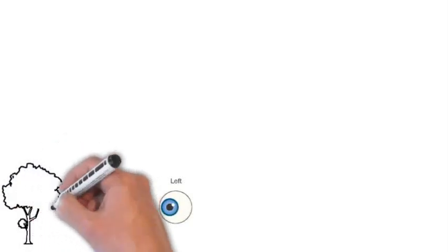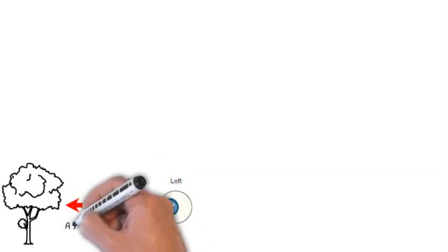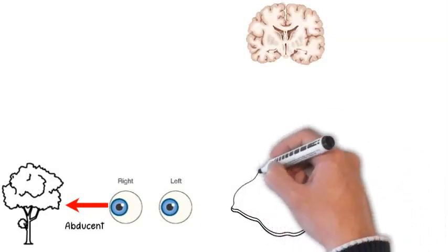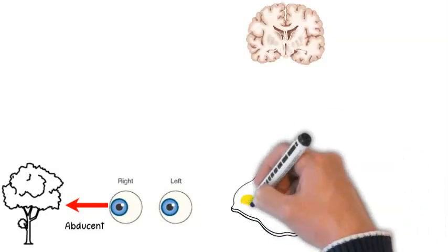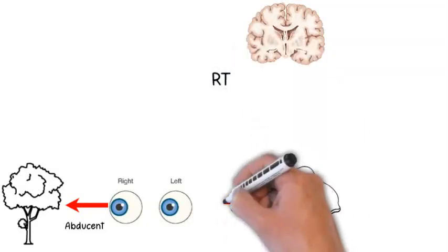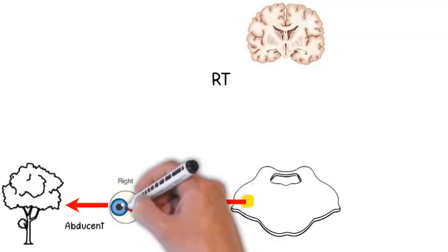When a person moves his eyes horizontally to look towards a tree, for example on his right side, the abducent nerve of the right eye will be activated. The abducent nerve nucleus lies on the right pons. This will ultimately activate the medial rectus muscles of the left eye to move towards the tree as well.